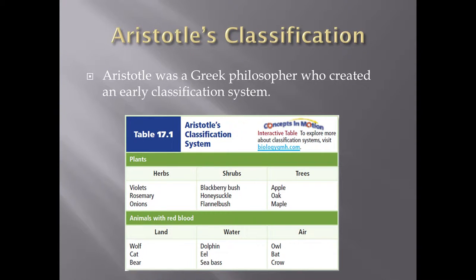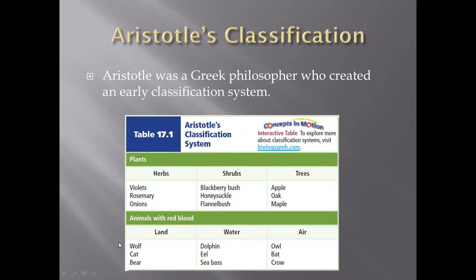So the first classification system came from a guy named Aristotle. Aristotle was an old Greek philosopher, and he was well known for doing a whole bunch of random scientific stuff. He created his own classification system where he had plants, and he broke plants into three types: herbs, shrubs, and trees. He also had animals with red blood, and he classified those into three different types: land, water, and air, with the different kinds of animals falling into this classification. Now this system is very simple, but it's also not very effective at classifying organisms because it lacks the details you would need to effectively classify one organism or another.